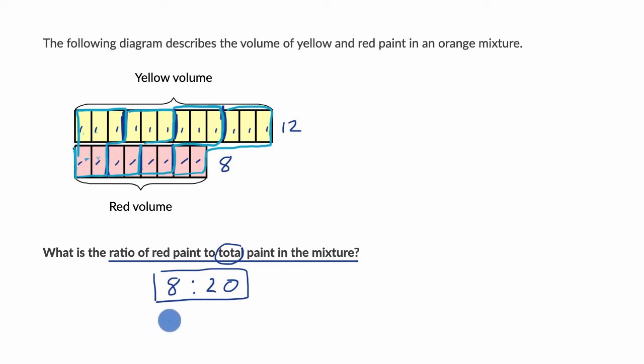So you could say that the ratio is also, for every two parts of red, I have five parts of total paint. And hopefully this makes intuitive sense right here why these two things are equivalent. If for every eight you have twenty total, well, if you divide that by four for every two of red, you're going to have five.